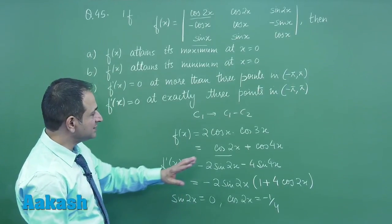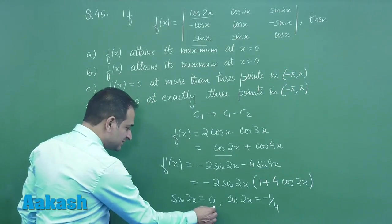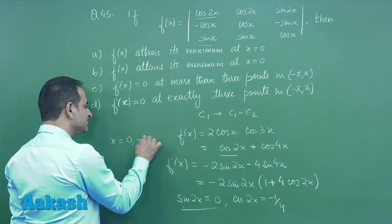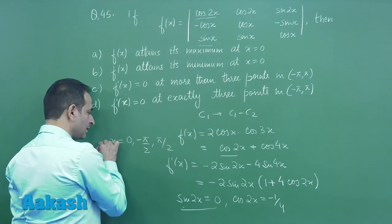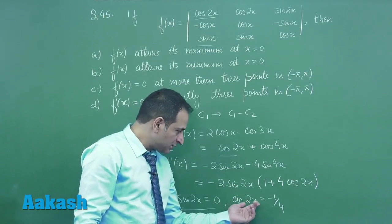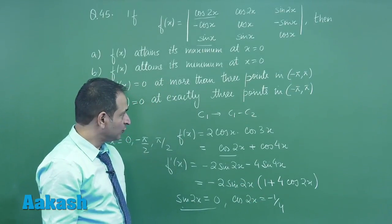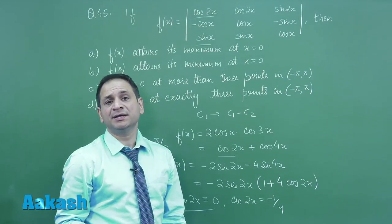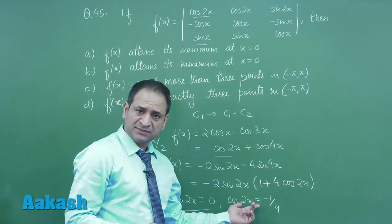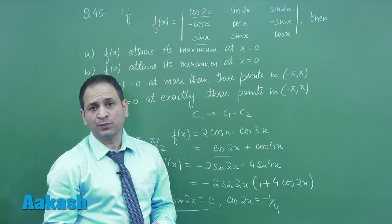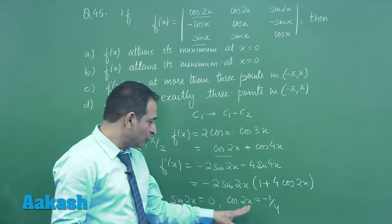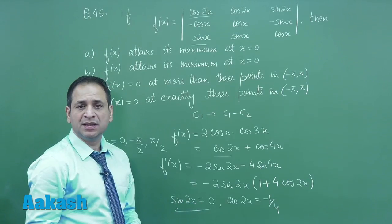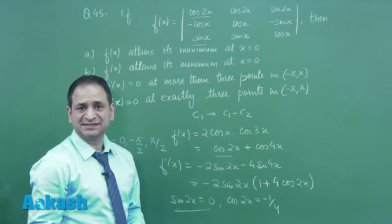So from here we can get the critical points. Sin 2x equal to 0 in the open interval minus pi to pi will definitely become 0 at 3 points: 0, minus pi by 2, and pi by 2. And when cos 2x equals minus 1 by 4, with 2x lying between minus 2pi to 2pi, this will be satisfied by 4 points. So in total, f'(x) will become 0 at 7 points.